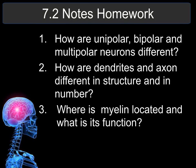The 7.2 notes homework is: number one, how are unipolar, bipolar, and multipolar neurons different? Number two, how are dendrites and axons different in structure and in number? Number three, where is myelin located and what is its function?